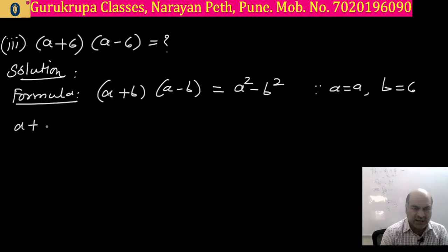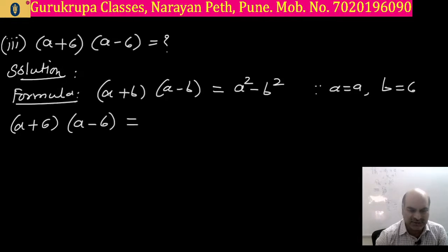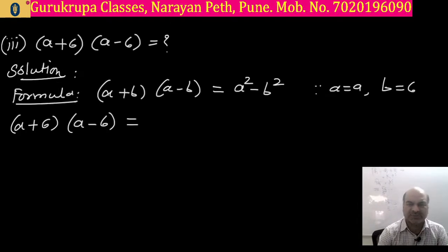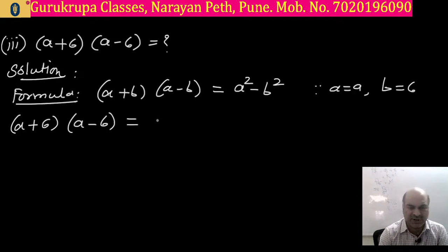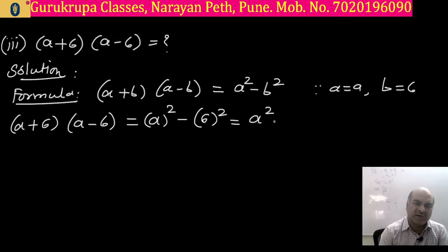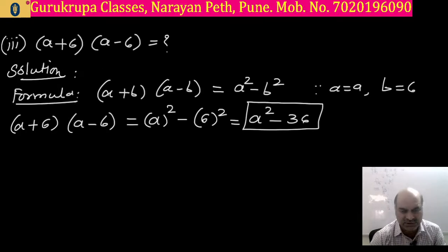Now we do the expansion using the formula. We expand: a square for the first term, and square of the second term which is 6 — giving 36. So the final answer is a square minus 36.